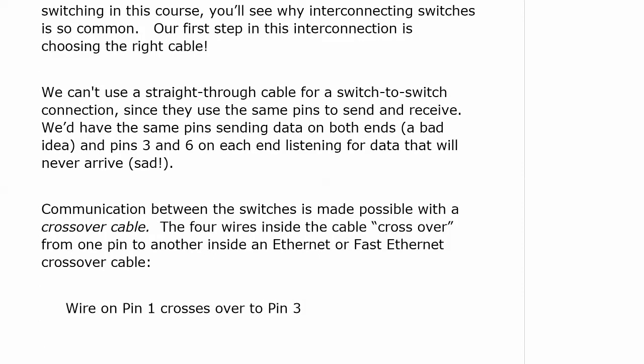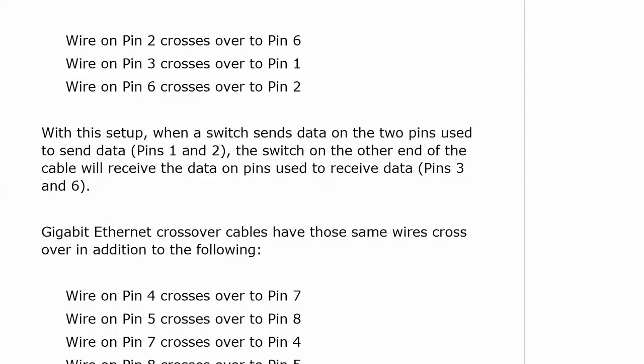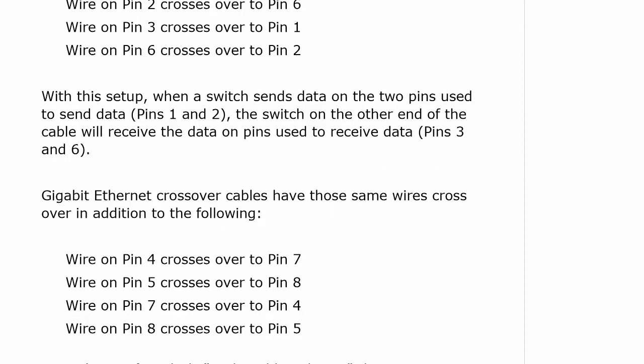Communication between switches is made possible by a crossover cable. The four wires inside an Ethernet or Fast Ethernet crossover cable cross over: the wire on pin 1 goes to pin 3, pin 2 to pin 6, pin 3 to pin 1, and pin 6 to pin 2. With that setup, when a switch sends data on pins 1 and 2, the other switch receives it on pins 3 and 6. Gigabit Ethernet crossover cables have those same crossovers plus additional ones: 4 to 7, 5 to 8, 7 to 4, and 8 to 5.